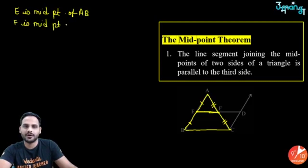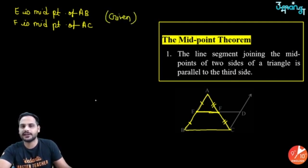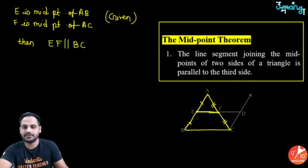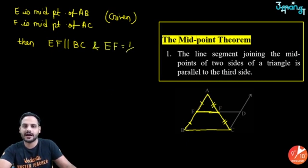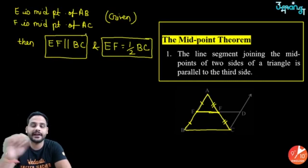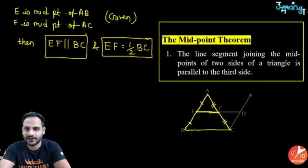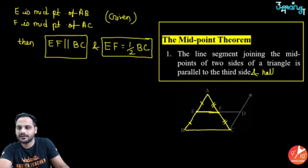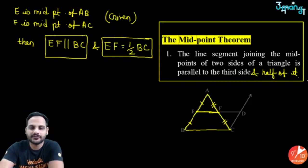So if E is midpoint of AB and F is midpoint of AC — that is your condition — then EF is parallel to BC and EF = ½ BC. The line joining midpoints of two sides of a triangle is parallel to the third side and half of it.